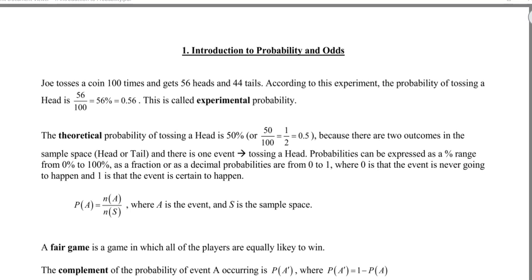So Joe tosses a coin 100 times; he gets 56 heads and 44 tails. According to this experiment, the probability of tossing a head is 56 out of 100, which can also be expressed as 56% — percent simply means out of 100 — and as a decimal, 0.56. This is called an experimental probability because he tossed the coin, so he's conducting an experiment.